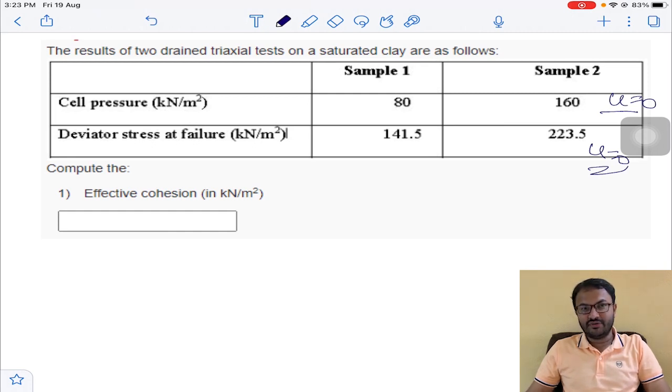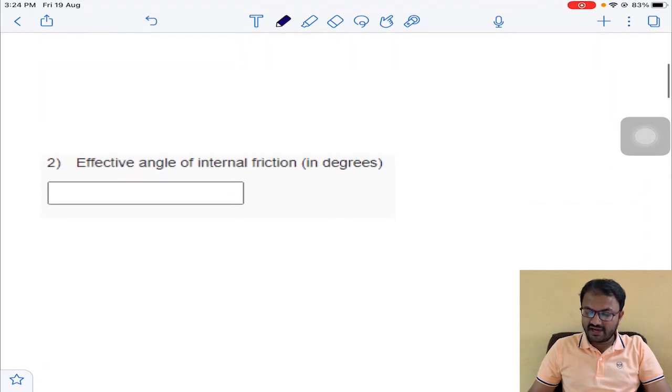This is my pore water pressure data. Don't get confused with that. Now cell pressure corresponding to sample number 1 and deviator stress at failure was given. The same cell pressure and deviator stress values were given for sample number 2 also. He has taken two trials.